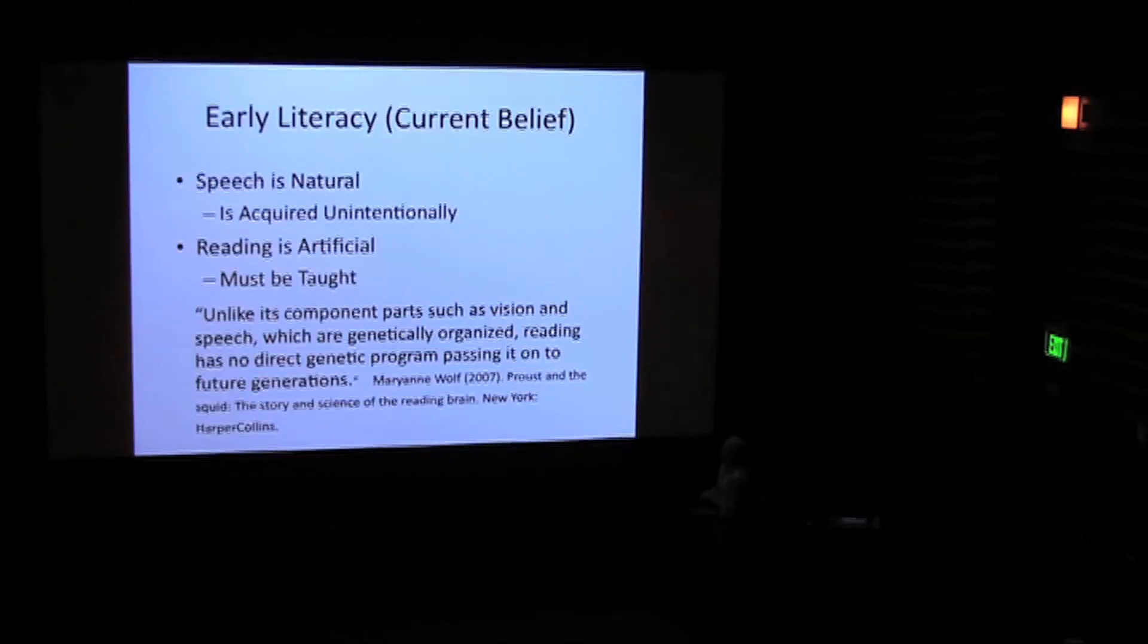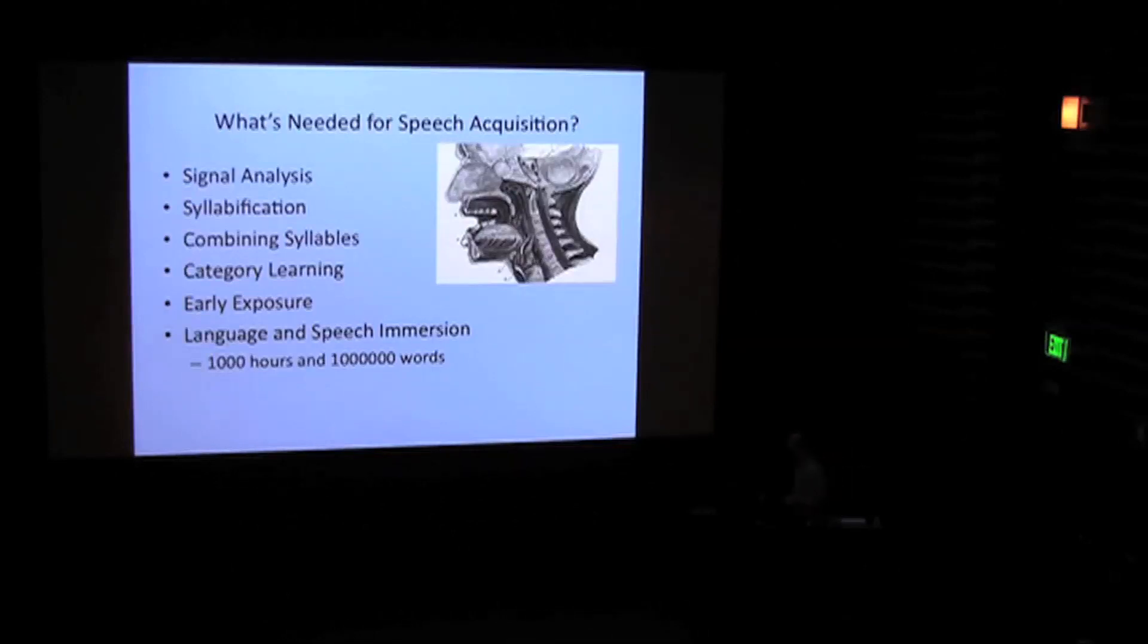So we have this belief then that speech and reading are very similar to one another. And if that's the case, then maybe reading can be acquired naturally in the same way that speech is acquired. So we want to take issue of this fact. Like Marianne Wolfe, a neuroscientist, says that unlike its component parts such as vision and speech, which are genetically organized, reading has no direct genetic program, passing it on to future generations. So the NBC Today show did this big expose of these companies that promote early reading where they got 10 neuroscientists to say that these kids before age five were not reading. They were just memorizing. But they were very skeptical of the idea that kids could learn to read before going to school and certainly to read naturally.